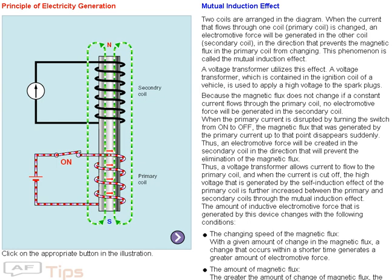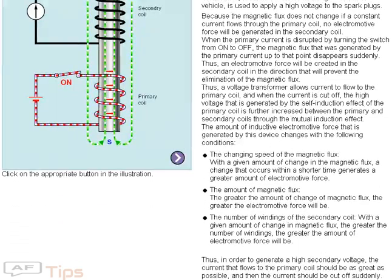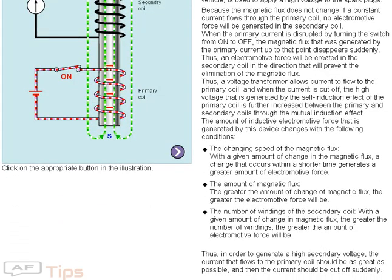The greater the amount of change of magnetic flux, the greater the electromotive force will be. Thus, in order to generate a high secondary voltage, the greater the number of windings of the secondary coil, the greater the amount of electromotive force will be. Thus, in order to generate a high secondary voltage, the current that flows to the primary coil should be as great as possible, and then the current should be cut off suddenly.